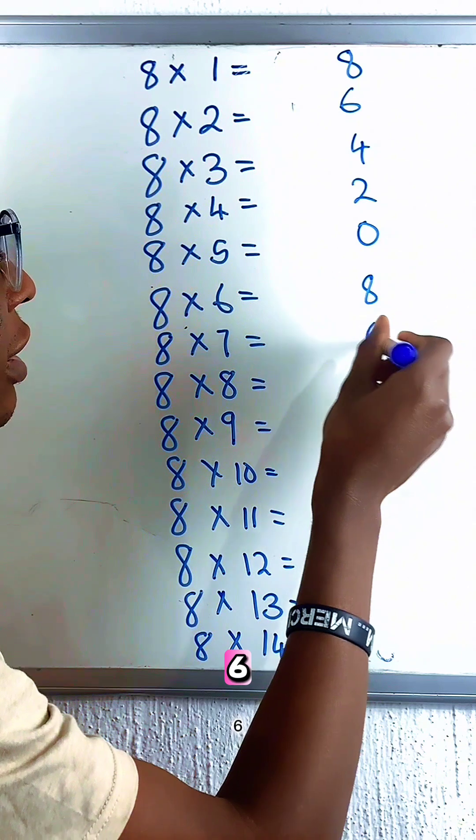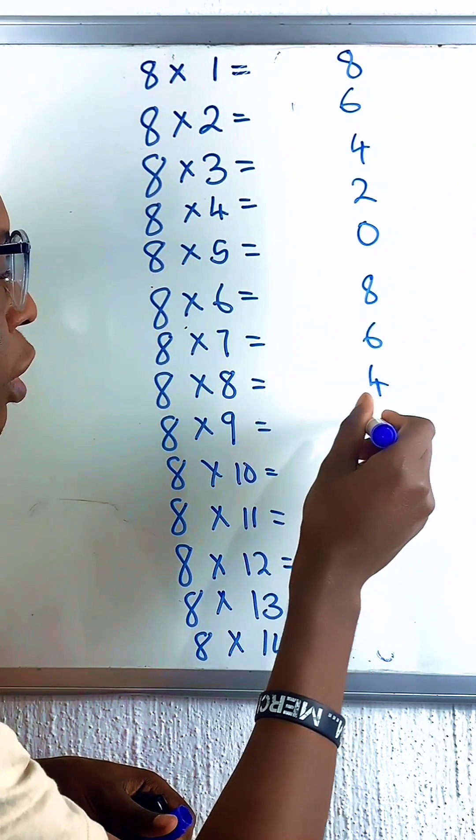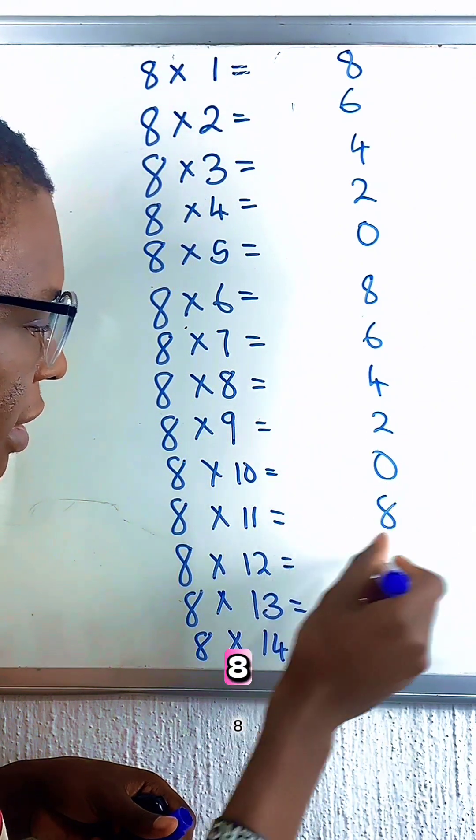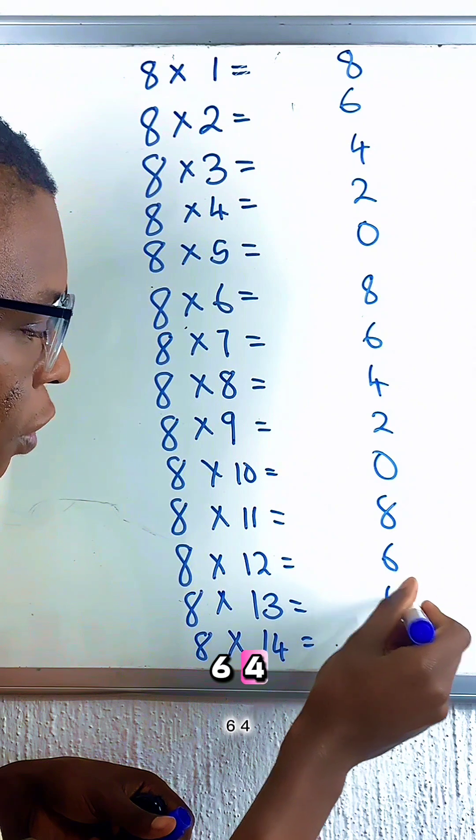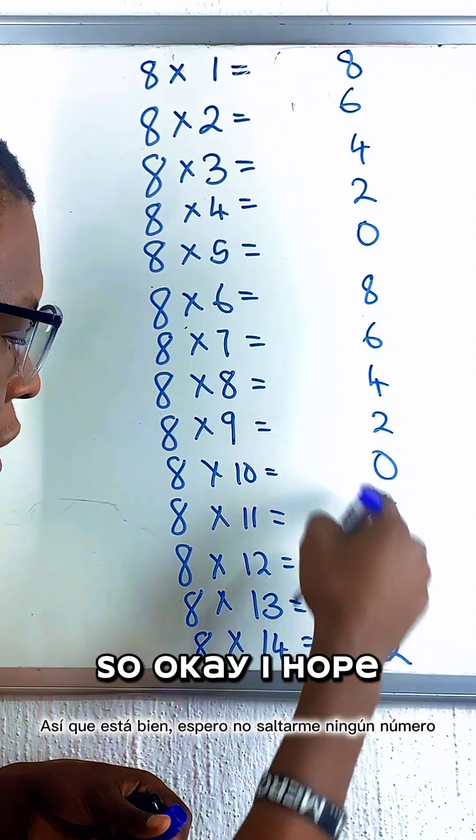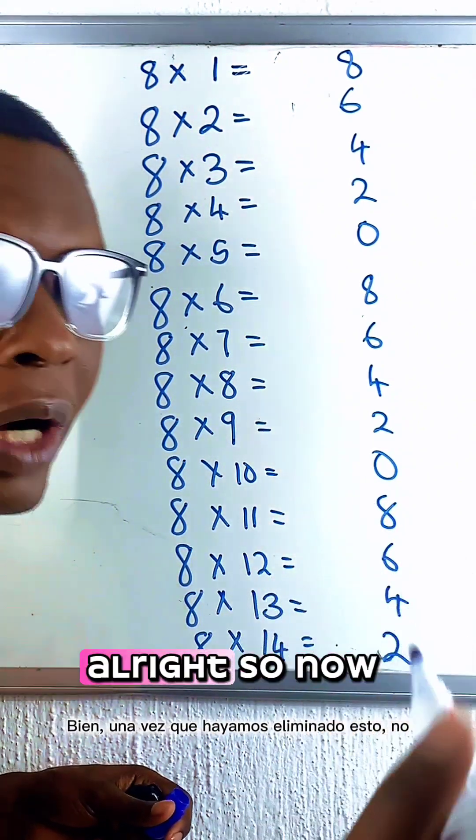8, 6, 4, 2, 0. 8, 6, 4, 2... Okay, I hope I'm not skipping any number. Alright.